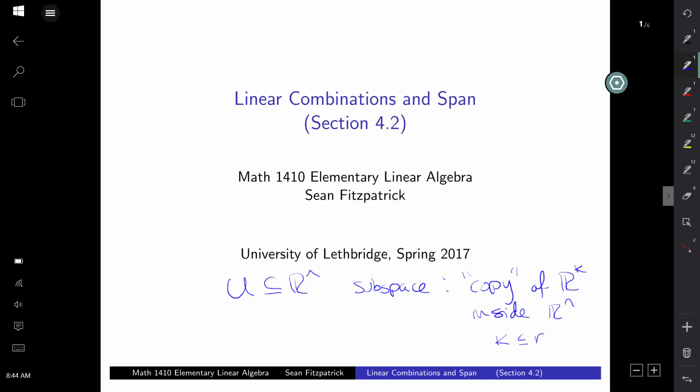The idea with a subspace is you want to think of it as sort of like a copy of R^k inside of R^n, where k is less than or equal to n. Like if you have a line through the origin, a line is like a copy of R. A plane is like a copy of R^2. So subspaces are basically like copies of lower dimensional R^n's sitting inside of a higher dimensional space, but they might be oriented at some funny angle. It's not necessarily a coordinate axis or plane, it could be any line or plane that passes through the origin.